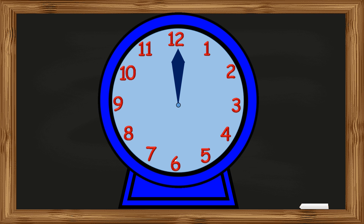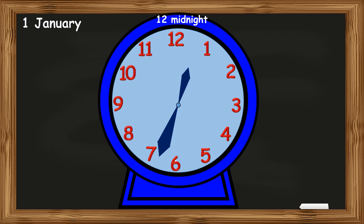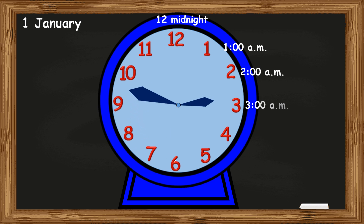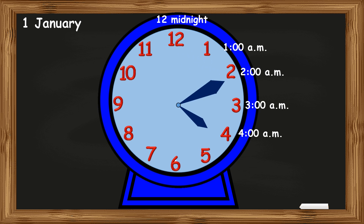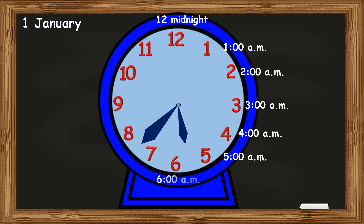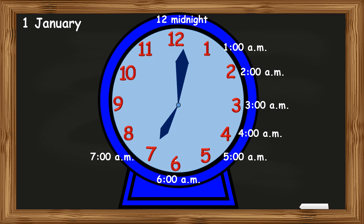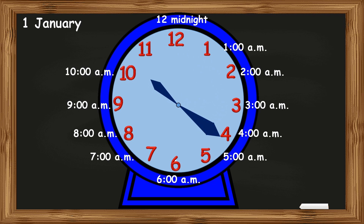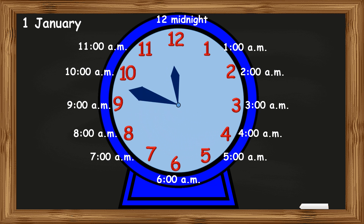To understand the concept of AM and PM better, let's take the example of 1st January. The first day of a new year begins at 12 midnight. One hour after 12 midnight, the time is 1 AM. After another one hour it becomes 2 AM, then 3 AM, 4 AM, 5 AM, 6 AM, 7 AM, 8 AM, 9 AM, 10 AM, 11 AM, and then it is 12 o'clock once again but now it is 12 noon.